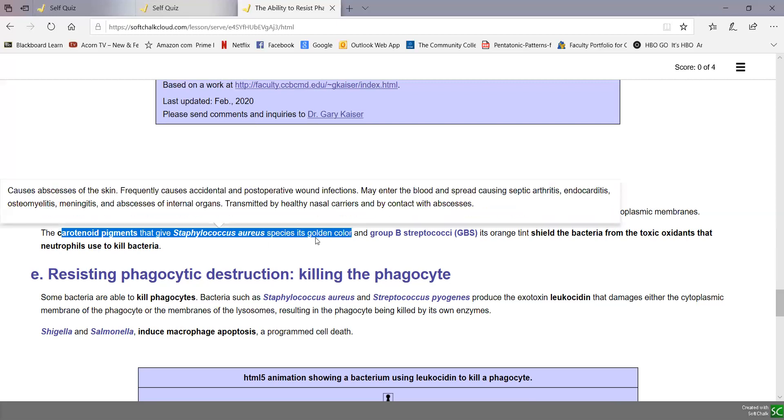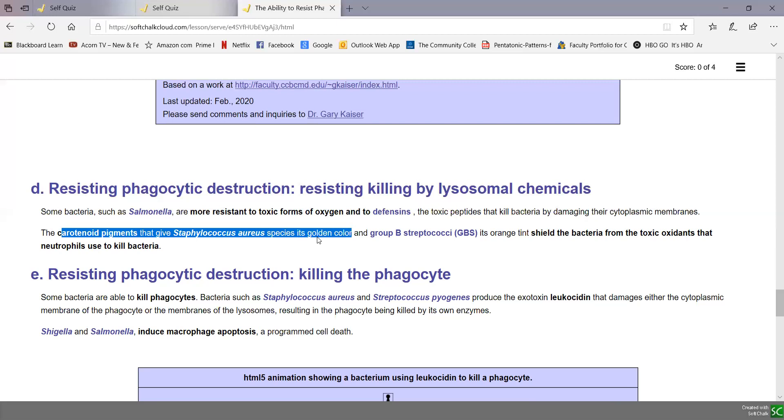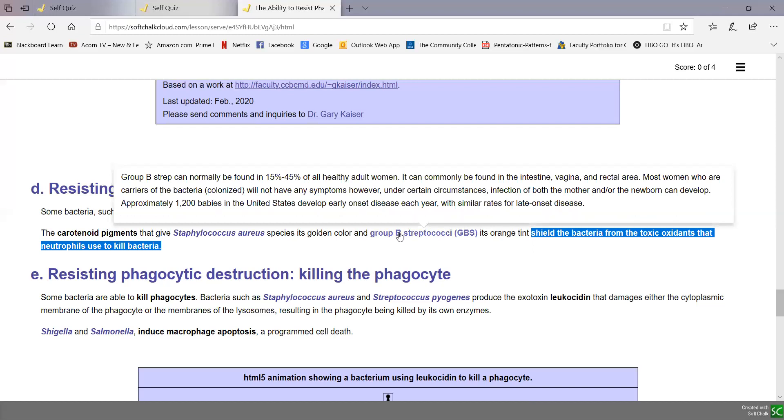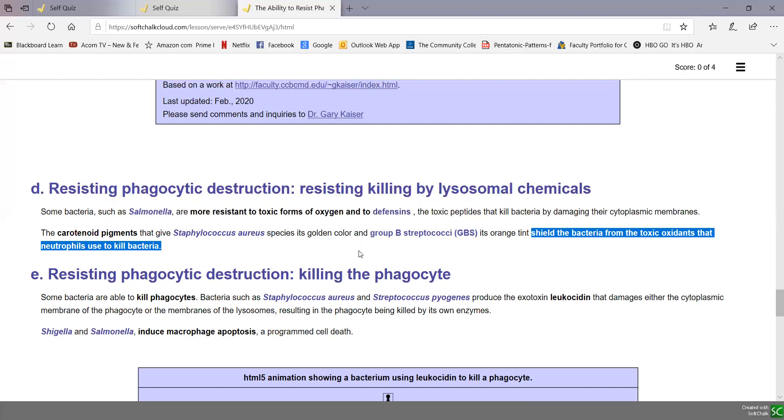The carotenoid pigments of Staphylococcus aureus give Staph its golden color when it grows on agar. Staphylococcus aureus, aureus means golden because it produces a golden water-soluble pigment. But that pigment is actually a virulence factor. It protects the bacteria or shields it from the toxic oxidants that neutrophils use to kill bacteria. Producing toxic oxidants is one of the major ways our white blood cells are able to kill bacteria. The carotenoid pigments of Staph aureus shield it from toxic oxygen. Group B Strep, that often colonizes healthy adult women but can serve as a source of infection of newborns during delivery, also produces a carotenoid pigment that's orange in color, and that shields the bacteria from toxic oxidants.